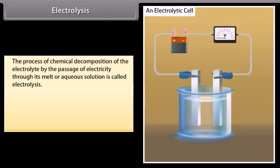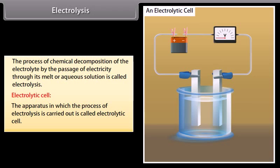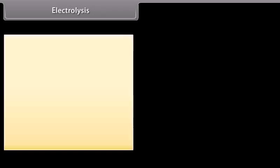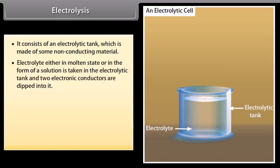Electrolysis. The process of chemical decomposition of the electrolyte by the passage of electricity through its melt or aqueous solution is called electrolysis. Electrolytic cell. The apparatus in which the process of electrolysis is carried out is called electrolytic cell. It consists of an electrolytic tank which is made of some non-conducting material. Electrolyte, either in molten state or in the form of a solution, is taken in the electrolytic tank and two electronic conductors are dipped into it.